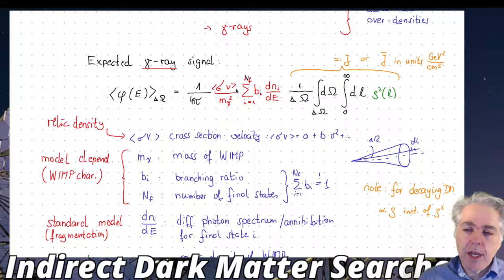Everything in the pre-factor is particle physics. We have the cross section for the annihilation, sigma times v, which is fixed through the relic density observed, around 3 times 10^-26 cm^3 per second. Then we divide by the mass squared because we have the mass density and the annihilation rate proceeds with the number density.